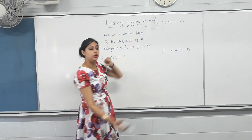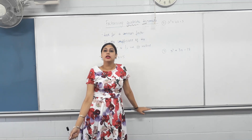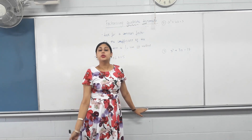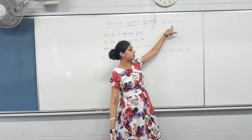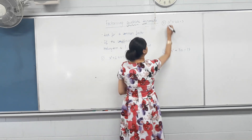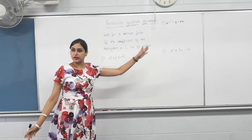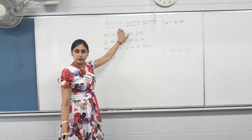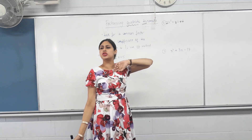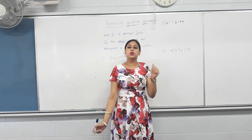I've also used the word 'trinomial.' The word 'tri' should give you a hint — three terms. So all these expressions have three terms. These are called quadratic trinomials. So the first step is again look for a common factor. It does not matter how many terms an expression has, you always look for a common factor.